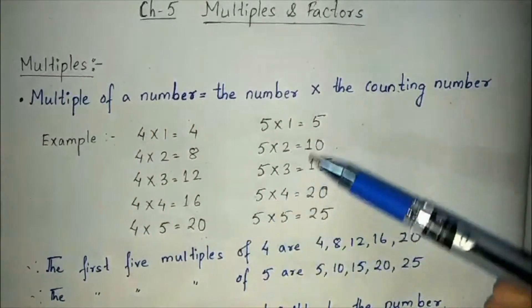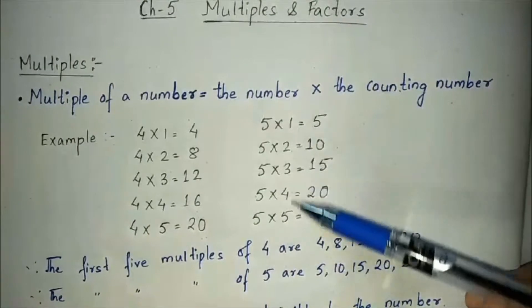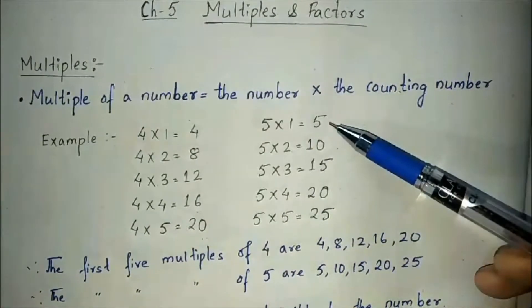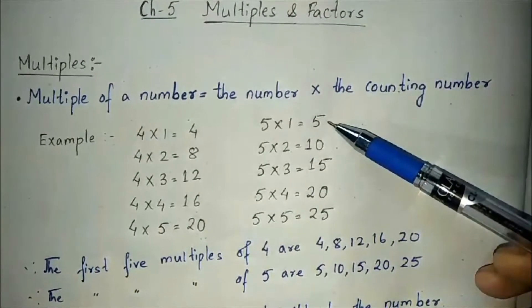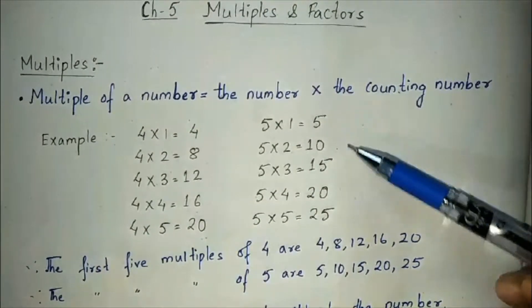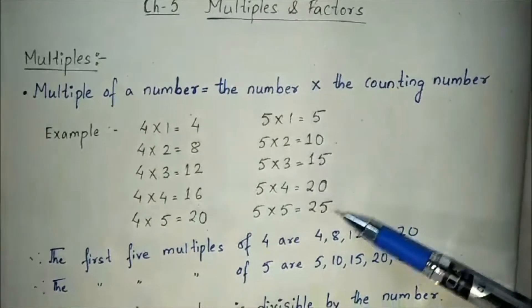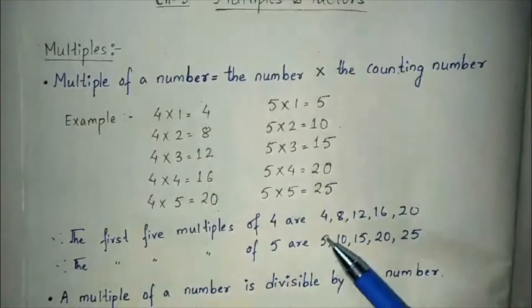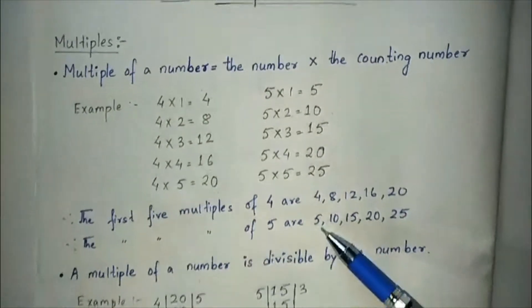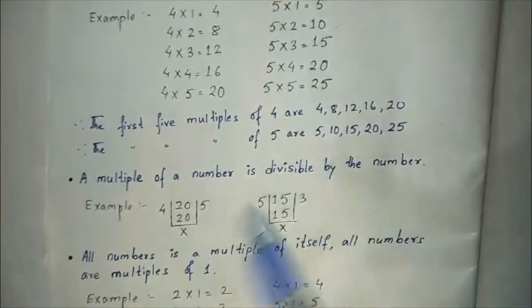In the same way, when you multiply 5 with a counting number you get the multiples of 5. 5, 10, 15, 20, and 25 are the first 5 multiples of 5.